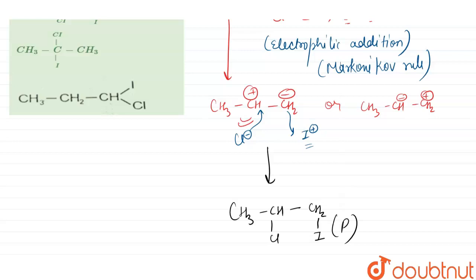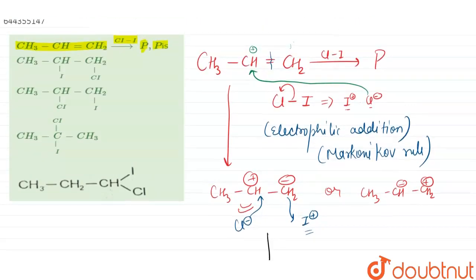Let us have a look at the options that have been given to us. Option number 1 is CH3-CH-I and CH2-CL. No, this is wrong here. The nucleophile will attack at this position. So our first option is incorrect. Second is CH3-CH-CL and CH2-I. So our second option is correct.